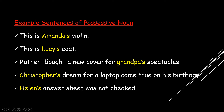This is Lucy's coat. Luther bought a new cover for grandpa's spectacles. Christopher's dream for a laptop came true on his birthday. Helen's answer sheet was not checked. Whose violin? Amanda's. Whose coat? Lucy's. Whose spectacles? Grandpa's. Whose dream? Christopher's. Whose answer sheet? Helen's.